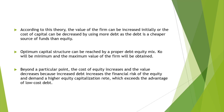In the second stage, we have an optimal capital structure — a judicious mix of debt and equity. With a proper debt-equity mix, the cost of equity begins to increase and the value decreases, because increased debt increases the financial risk of equity shareholders, and they demand a higher equity capitalization rate, which exceeds the advantage of low-cost debt.